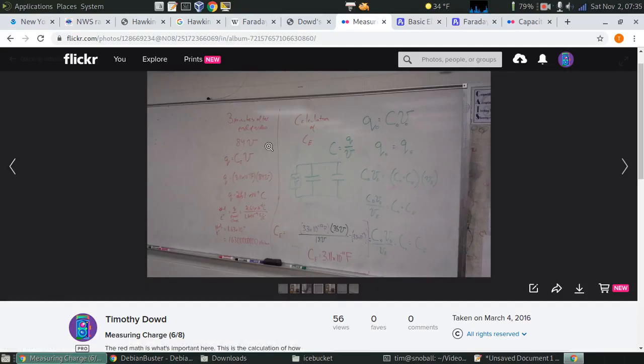So about three minutes after that, I was finally able to get the ball into the ice bucket. And that made the electrometer read 84 volts. Let's take a look at that.